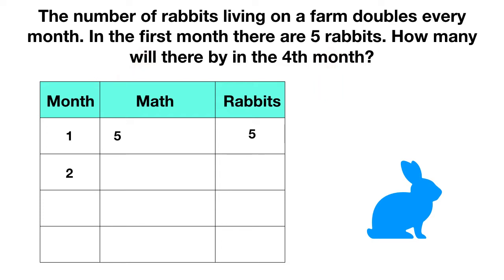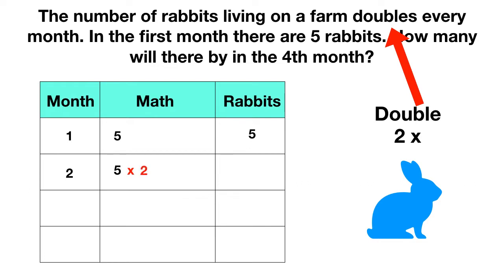In the second month, the number of rabbits will double. To double means to be two times as much, so the original five rabbits will get multiplied by two. Five times two means there are ten rabbits. In the third month, it will double again, so we'll have the same amount as before, but then again times two.